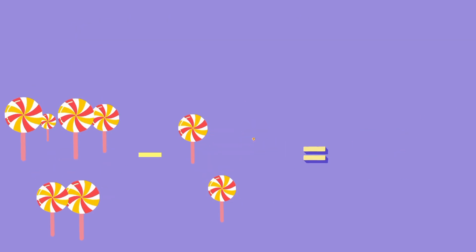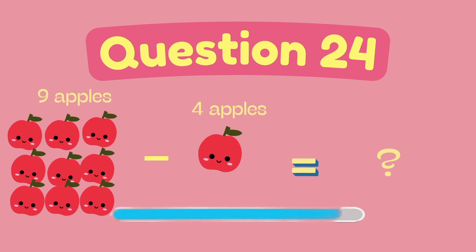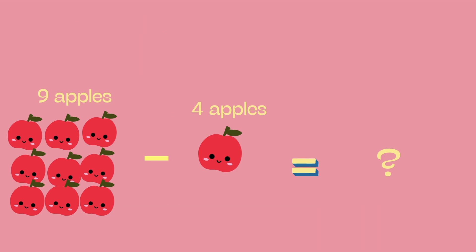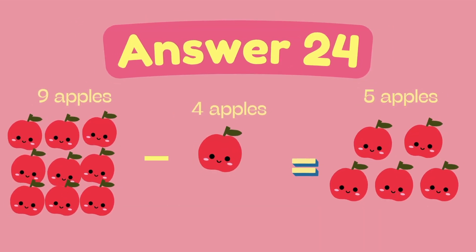What is 9 minus 4? What is 7 minus 4? The answer is 3.